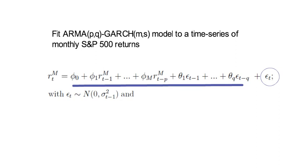So these returns are conditionally Gaussian with a time varying variance. The unconditional distribution won't be Gaussian.